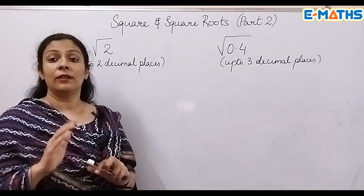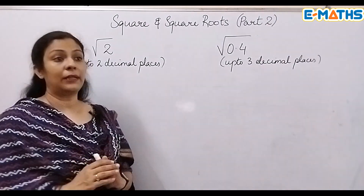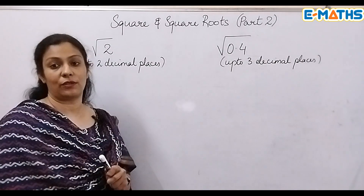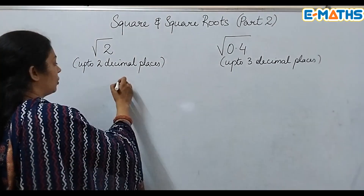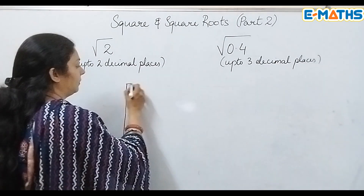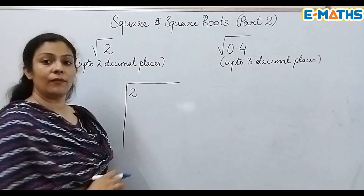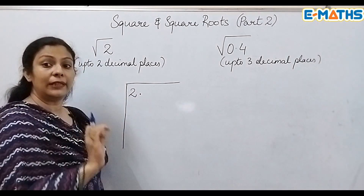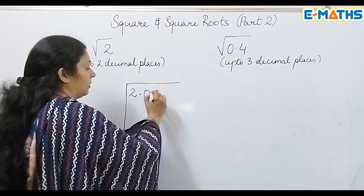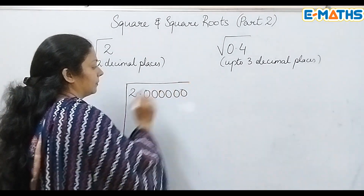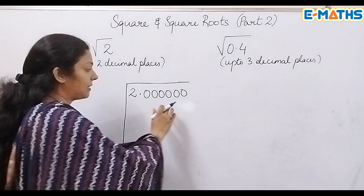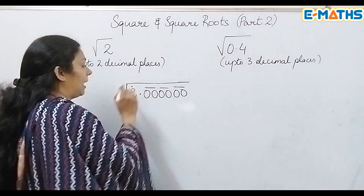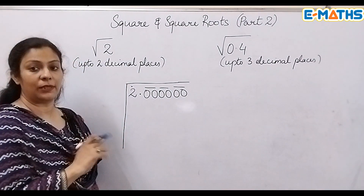When finding a square root we make pairs, but here we have a single digit number and we cannot find the square root until we make some pairs. So I'll write this in the long division method. I'm going to put a decimal point and make three pairs of decimal places — for three pairs I've taken six zeros — so that I have three decimal places and can find the square root of this number.